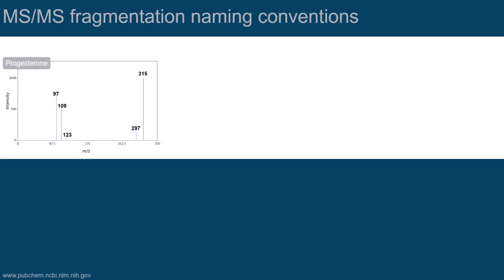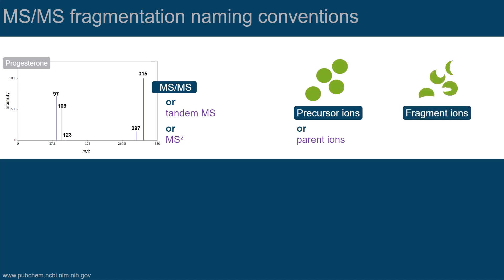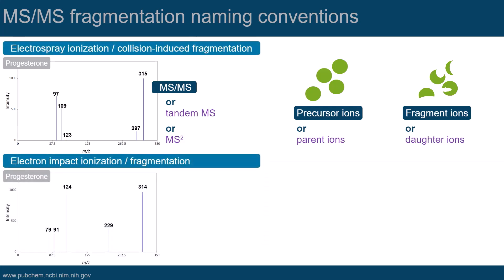The technique of fragmenting ions in a mass spectrometer and the corresponding mass spectra are sometimes referred to as MS-MS, tandem-MS, or MS to the two. The precursor ion can also be named the parent ion, and the fragment ions are sometimes called daughter ions. Note that different fragment ions can be observed for the same molecule, depending on which instrumental setup is used, as shown in this example.